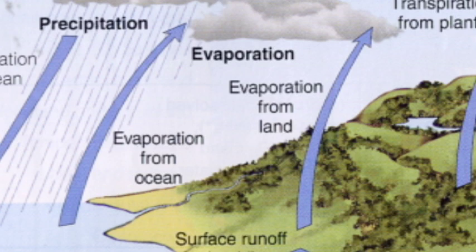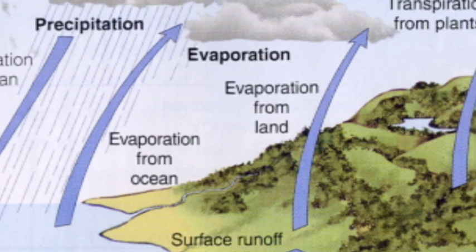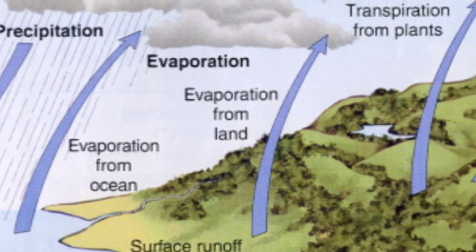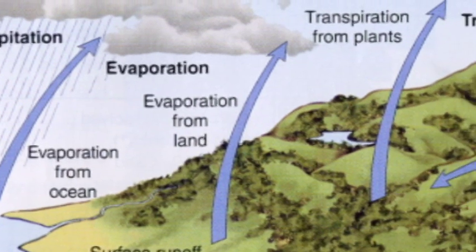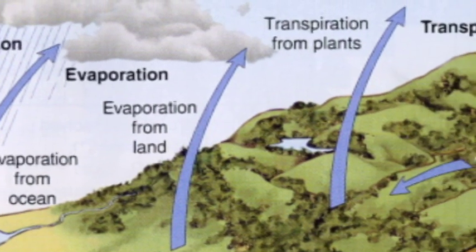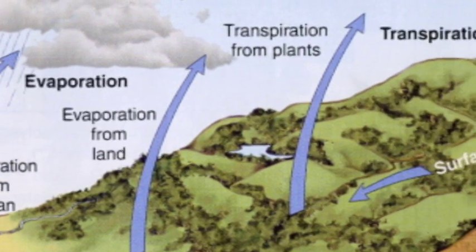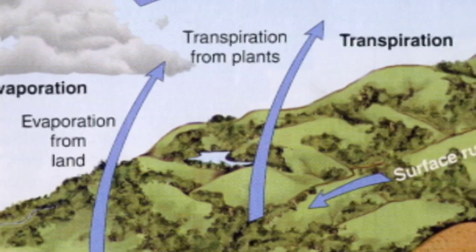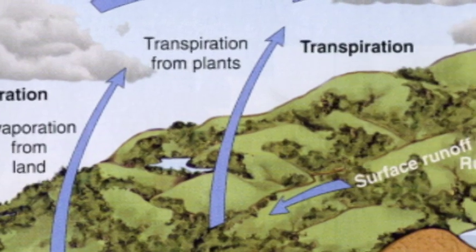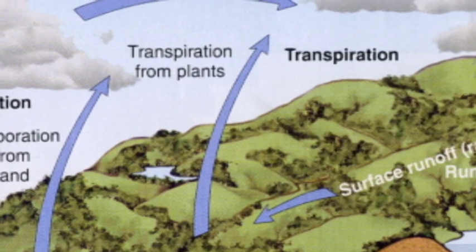Winds and air masses transport water vapor over various parts of Earth. Evaporation of water from leaves is extracted from soil by roots and is transported throughout the plant in a process called transpiration.